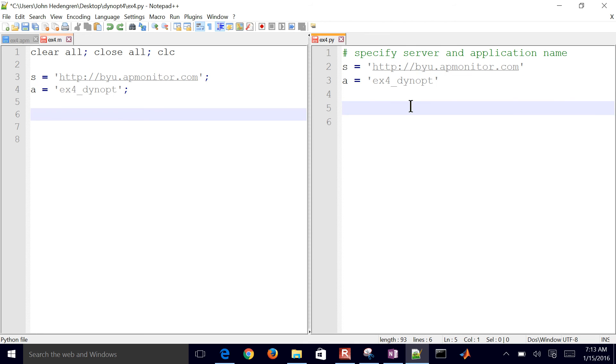For Python, I'm just going to define a server and an application name. Next, I'm going to add the path to the APM folder, and in Python, I just import APM. That's the AP Monitor library for doing these dynamic optimization problems.